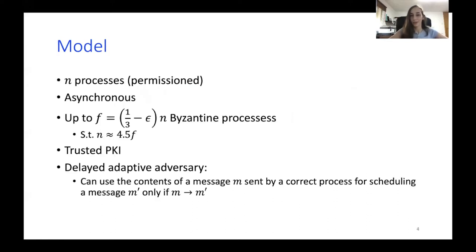So the model we are assuming is the following. We're assuming n processes in the permissioned settings, asynchronous, where up to almost a third of the processes may be Byzantine. We also assume trusted PKI and a delayed adaptive adversary. A delayed adaptive adversary means that the adversary can use the contents of a message m sent by a correct process for scheduling another message m-prime only if m causally precedes m-prime.